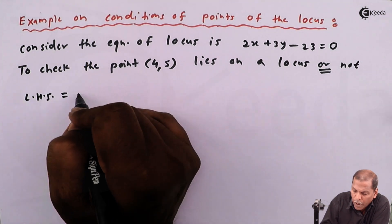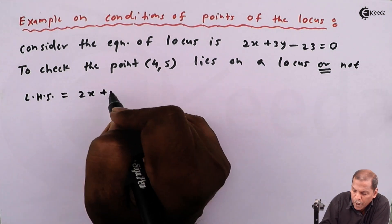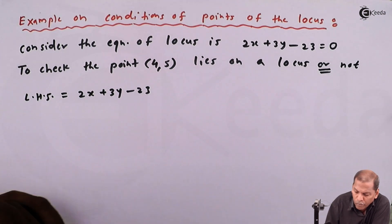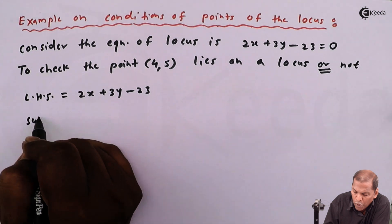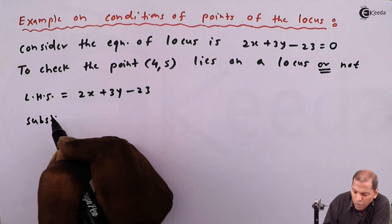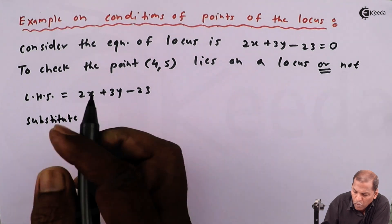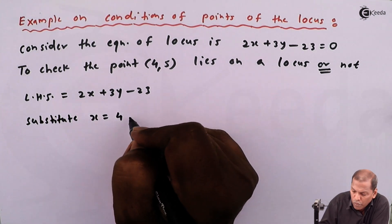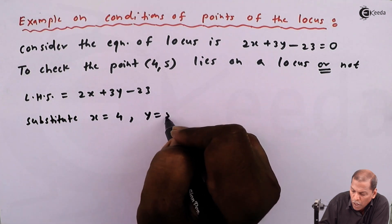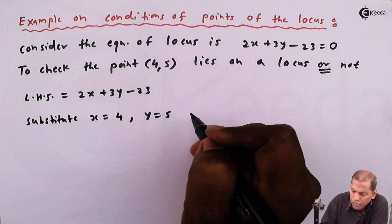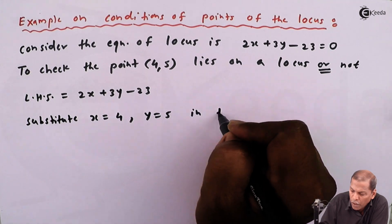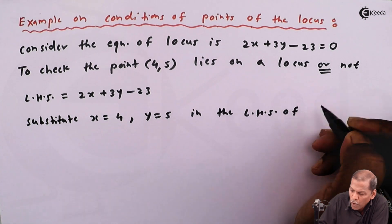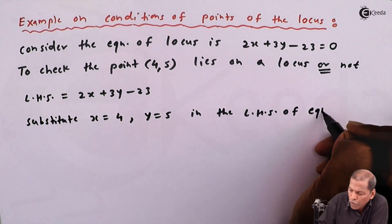That is equal to 2x plus 3y minus 23. Substitute x equals 4 and y equals 5 in the left hand side of equation of locus.